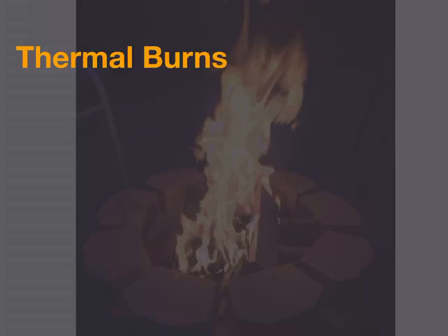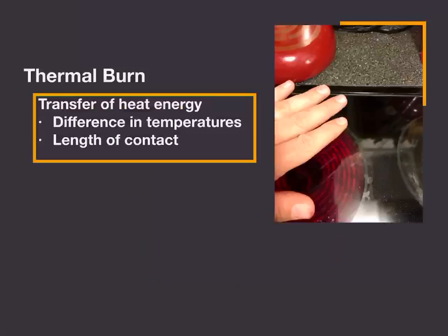Thermal burns occur when high heat damages the skin through heat energy transfer. The larger the temperature difference between the heat source and the skin, the greater the transfer — a 500-degree stove transfers far more heat than a 200-degree one. The duration of contact also matters: leaving your hand on a burner for several seconds causes a worse burn than reflexively pulling it away in a millisecond.